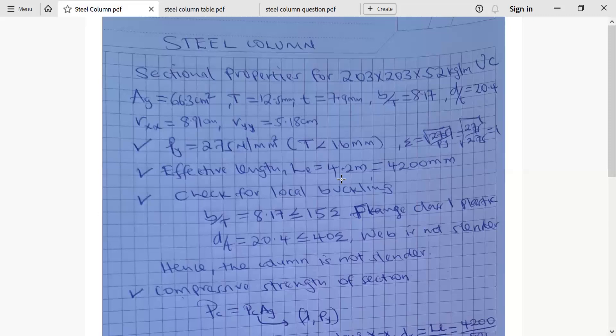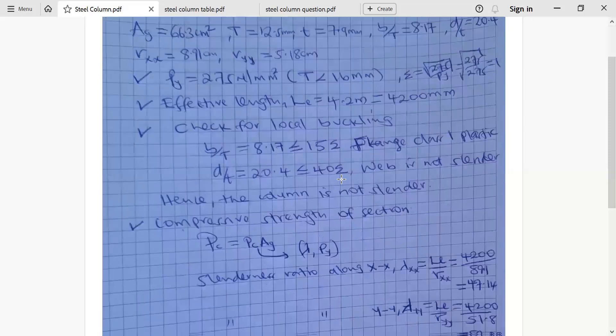Now, because of the findings of our check, we can now say compressive strength, capital PC is equivalent to pc times gross area of the section. Remember this pc is obtained from the table as intersection of slenderness ratio and the design steel strength, PY.